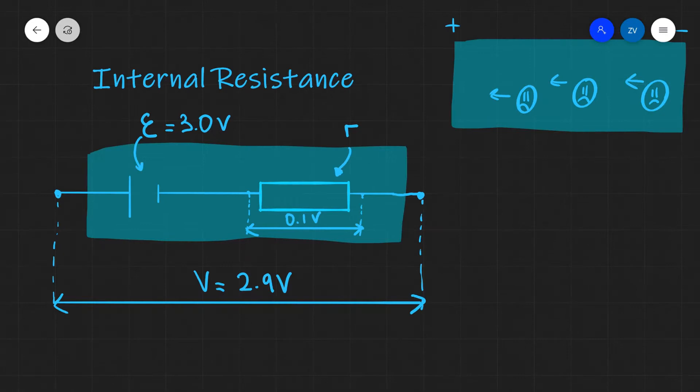We can visualize any cell with the following illustration. All we need to do is imagine a cell of a certain EMF that is connected in series with a small resistor r, which is in fact the internal resistance.